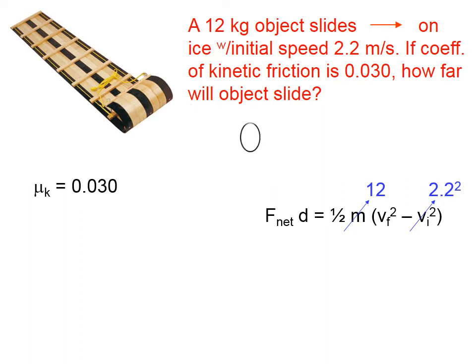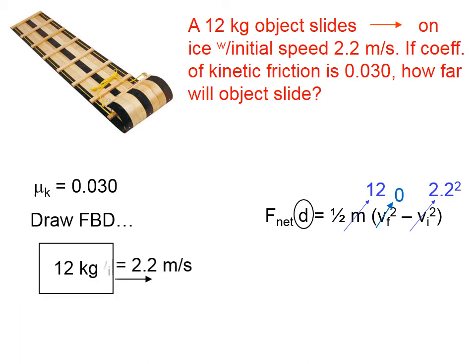and the question is, how far will the object slide? So we're looking for D again, and implied in this is what the final speed is, and that's going to be 0. So again, it looks like we need to find the net force, and once we've done that, we should be able to calculate how far this object slides. So let's draw a free-body diagram.